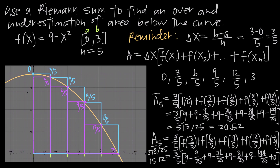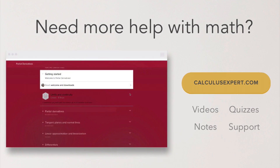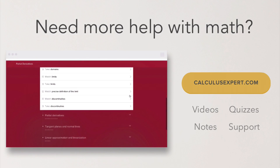So we have an overestimation of area of about 20.52 square units and an underestimation of about 15.12 square units, meaning the exact area is somewhere between those two values, between about 15 and about 20. That's how you use a Riemann sum to find an over and underestimation of area below the curve. For extra help with math, check out calculusexpert.com, where you'll find videos, notes, quizzes, and formula sheets.